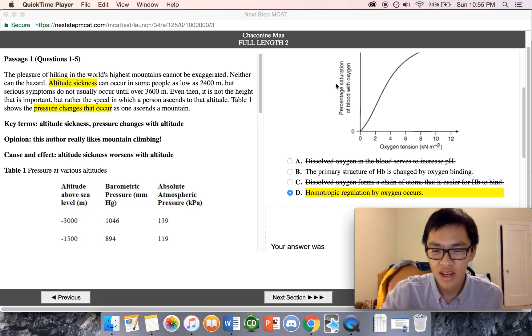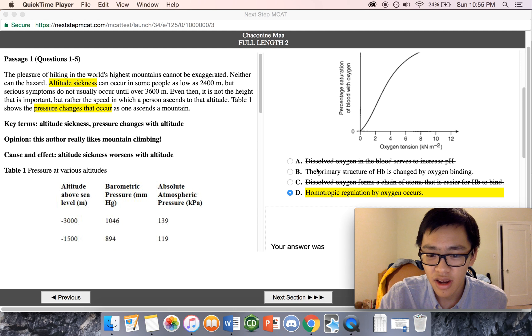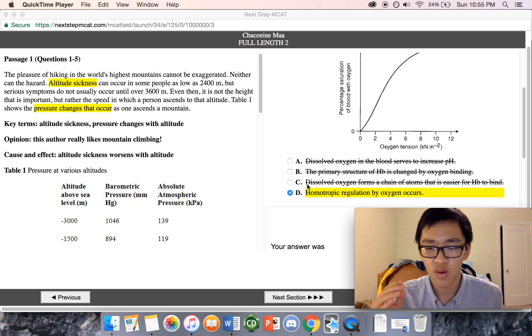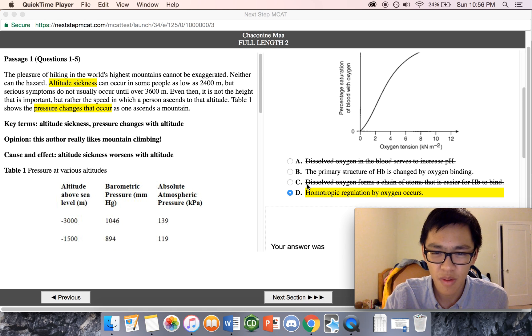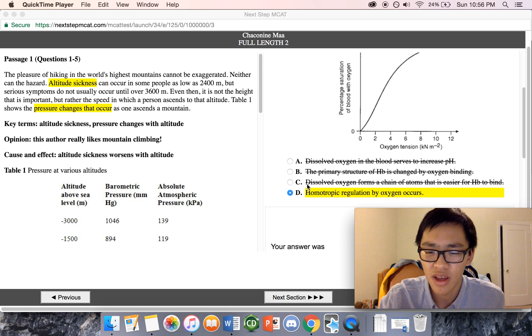I remember that I saw C: dissolved oxygen forms a chain of atoms that is easier for hemoglobin to bind. The first thing I thought was oxygen is not going to form a chain of atoms. Oxygen itself is diatomic, so it's going to be O2. I remember somewhere that there's something like it happens to be like a radical, but I do not ever recall oxygen acting as a chain of atoms, so I crossed that one out immediately.